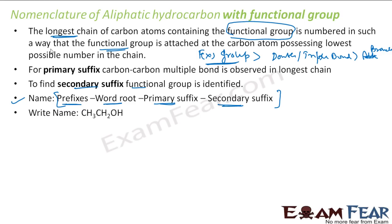Let's take this example. CH3-CH2-OH. There is no prefix. The word root: there are two carbons, so ETH is the word root. Primary suffix: all single bonds, so AN. Secondary suffix is nothing but the functional group — this is an OH group, so OL is the secondary suffix for alcohol. The name is ethanol: ETH (word root) + AN (primary suffix, all single bonds) + OL (secondary suffix, the functional group).